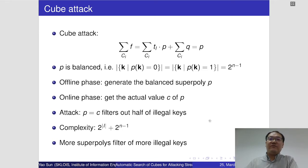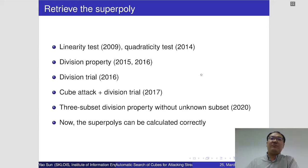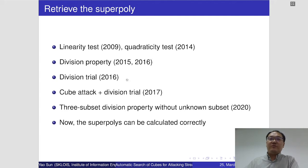In the cube attack, the first problem is how to generate the superpoly p, and many works have been done to solve this problem. In the earlier years, the linearity test and the quadraticity test were used. In 2015, the division property was presented, but the related computations were very slow. In the next year, the concept of division trail was proposed — it is similar to the concept of differential trail and can be computed very efficiently using MILP methods. In 2017, the division trail method was first applied to cube attack.